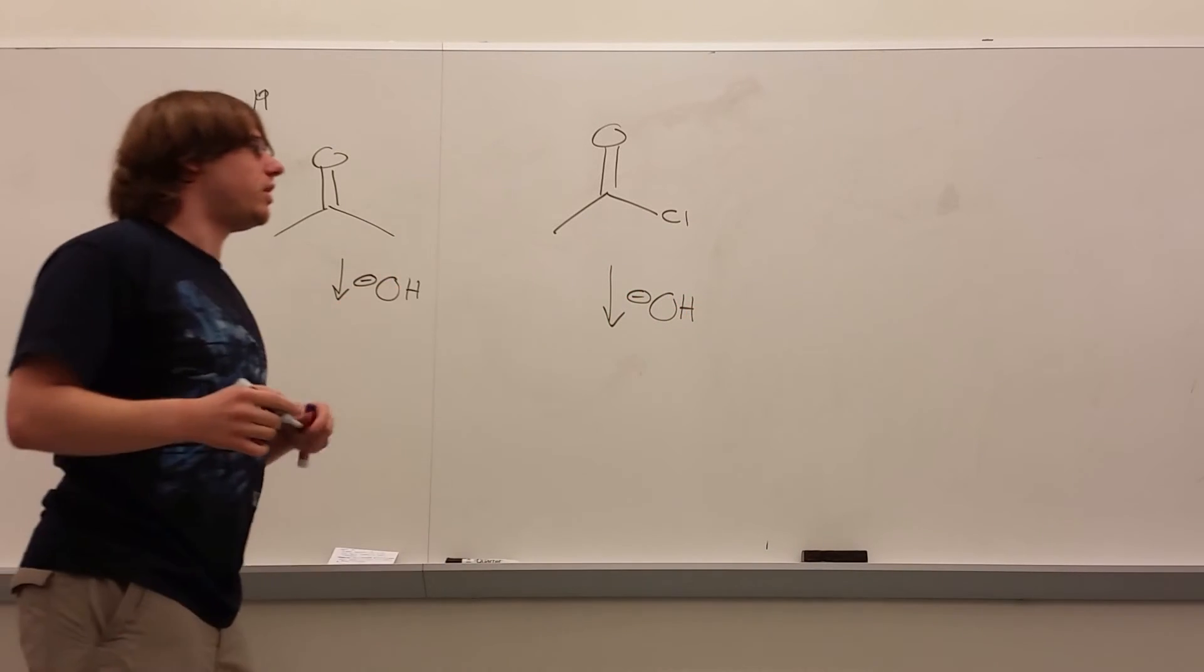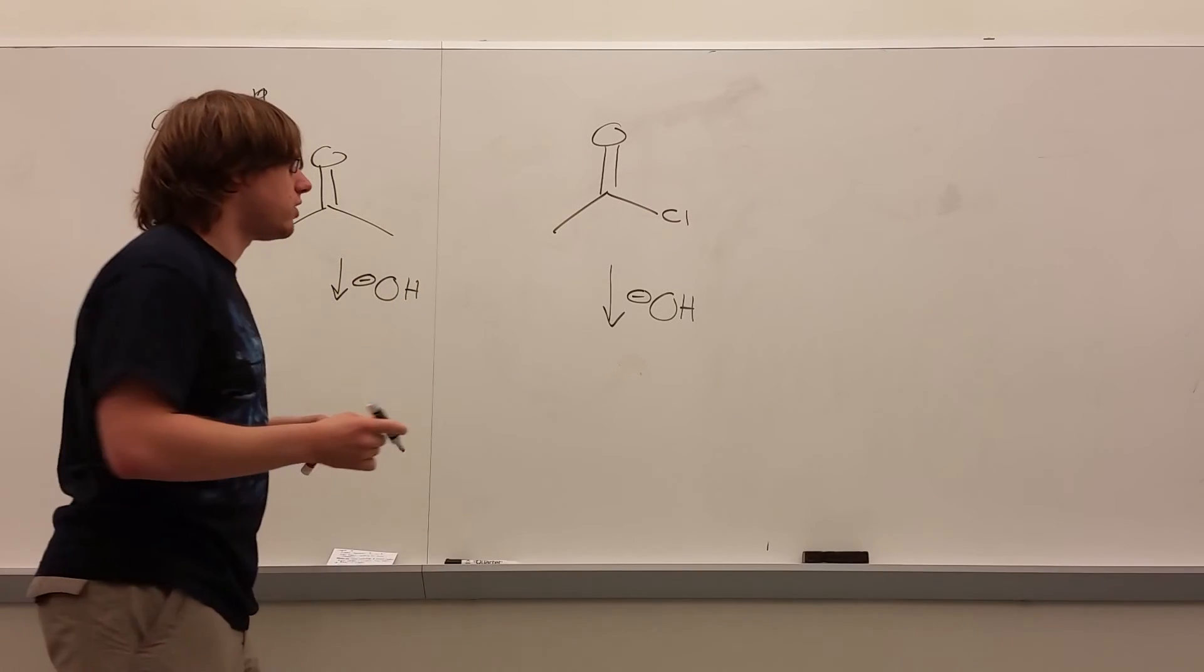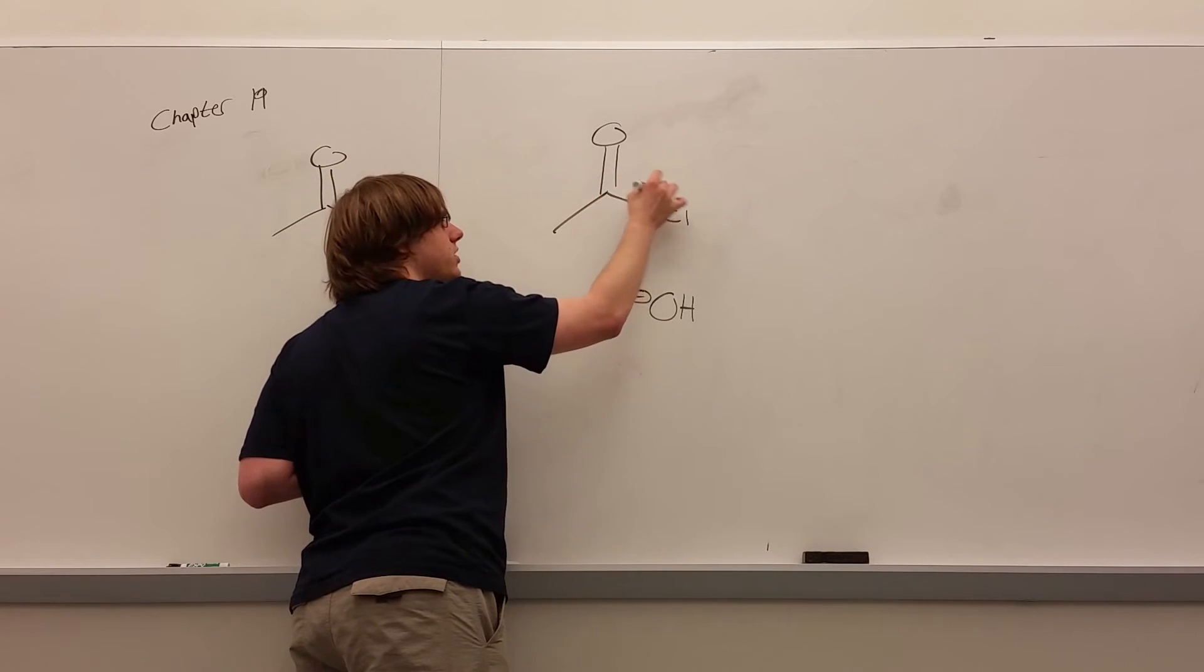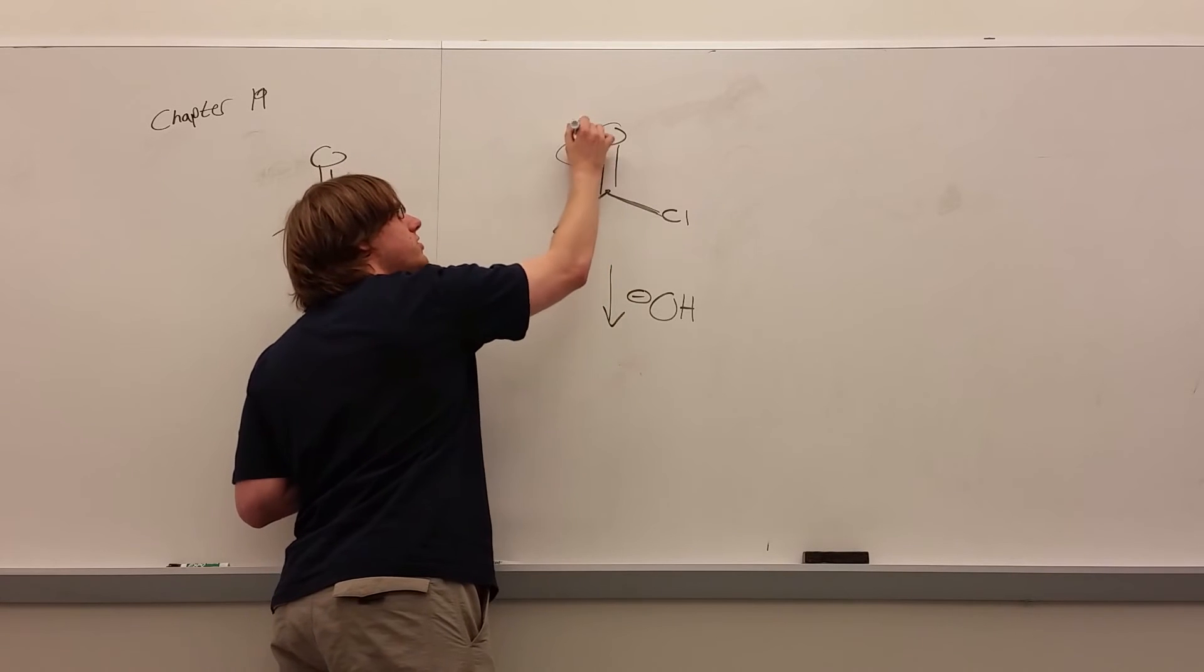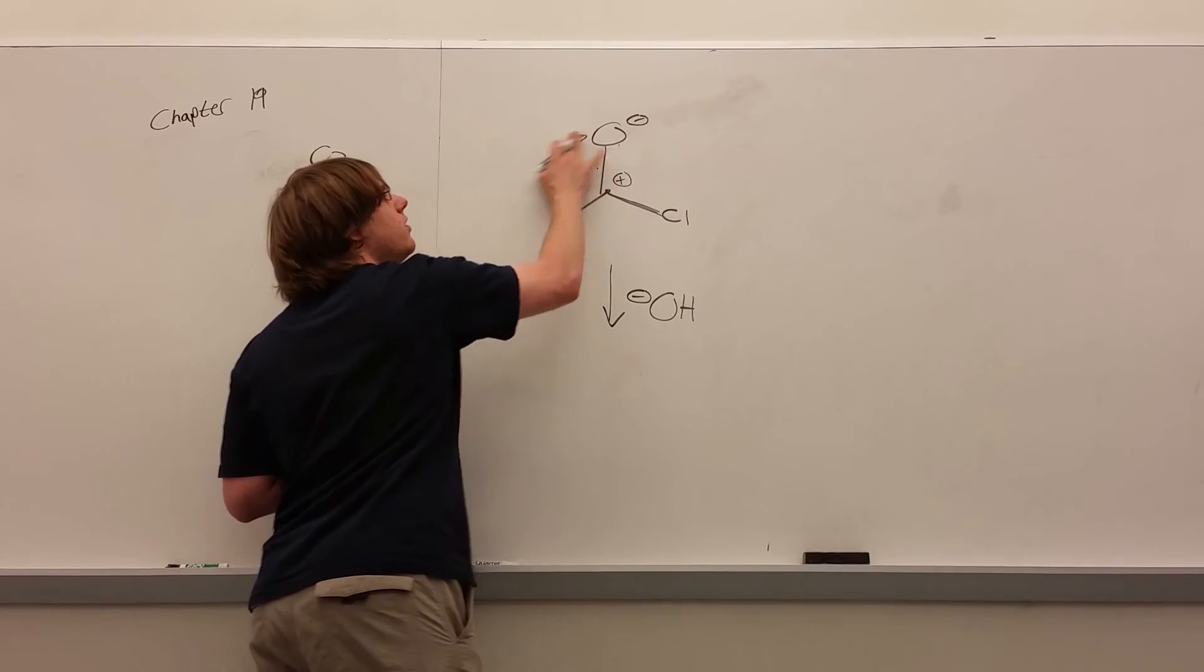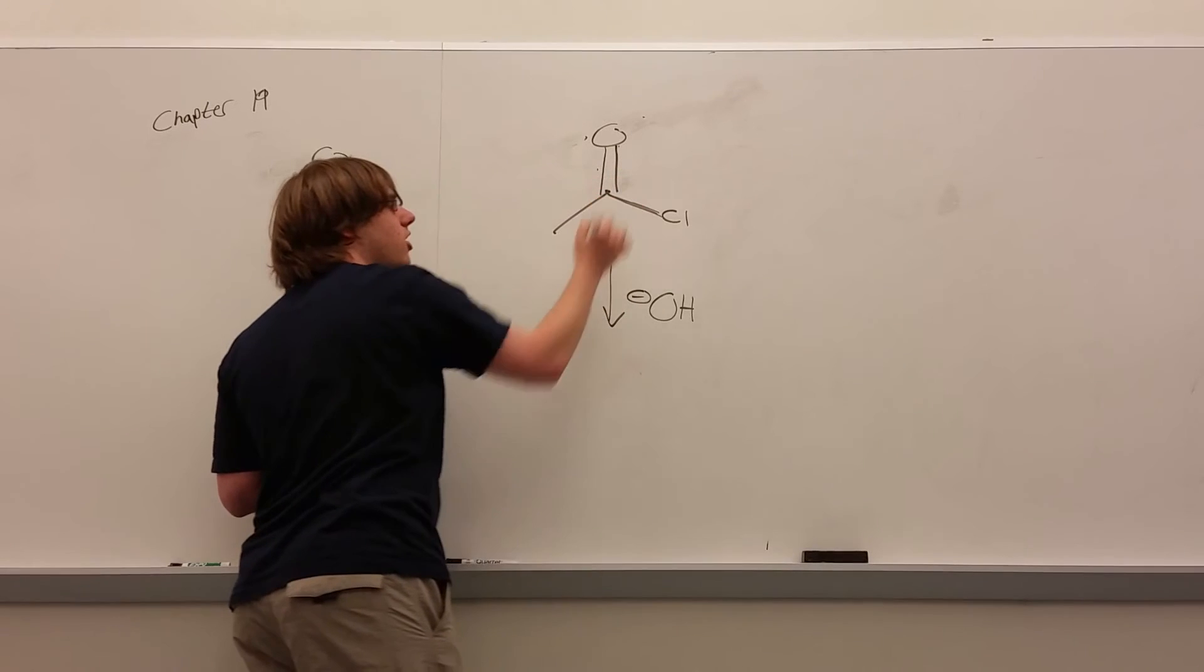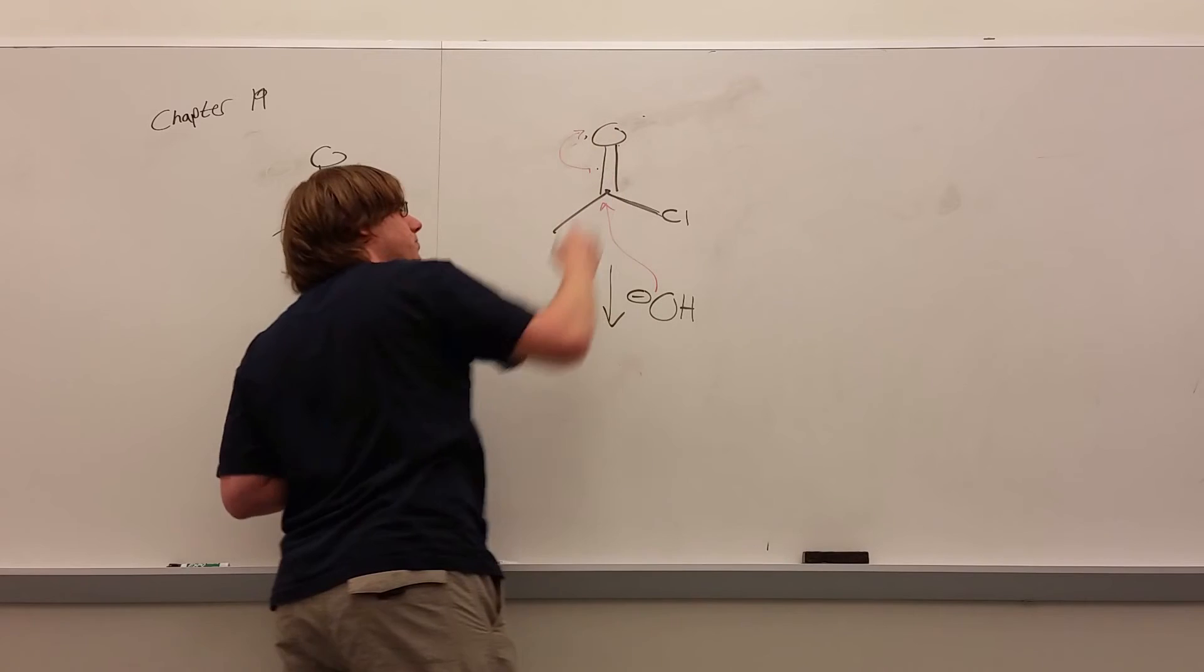Let's start with the acyl halide, because this one should look familiar to you. Chlorine, we know, is a really good leaving group, and we know it's also very electronegative, which is why it's a good leaving group. It's pulling electrons away from this carbon, which we also know through resonance with the oxygen can become OH- carbon positive. So, this carbon is very positive, which means that OH- is almost always going to look to attack this carbon right here, and that will swing up.